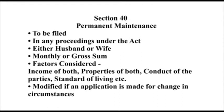Once permanent alimony or maintenance is granted, it can be modified. Under Section 40 itself, a simpliciter application for modification of maintenance can be filed by the parties. When filing for modification, there does not need to be a petition already pending. Even after the original petition is disposed of and permanent alimony is granted, an application for modification can still be filed by the husband or wife on the basis of changed circumstances. Factors for Section 40 include income, property, conduct, and standard of living of both parties.